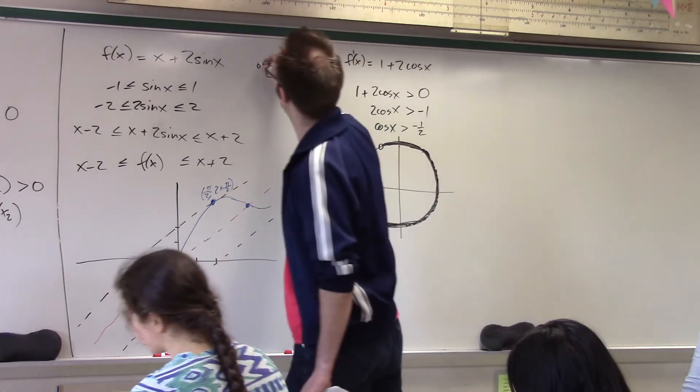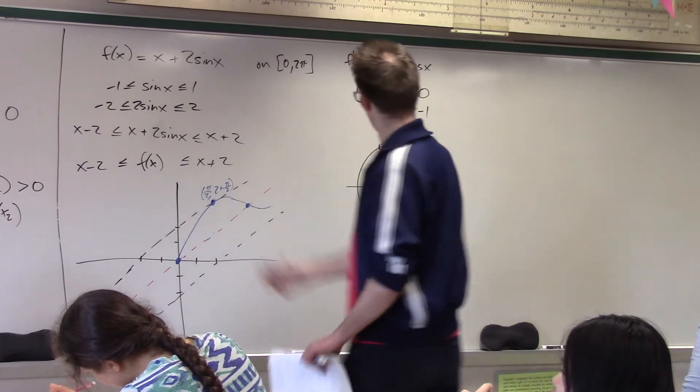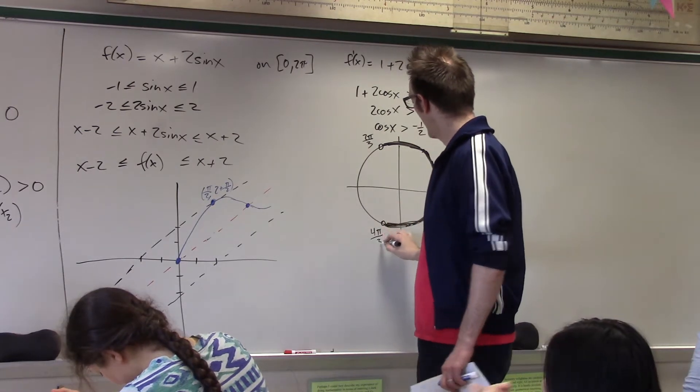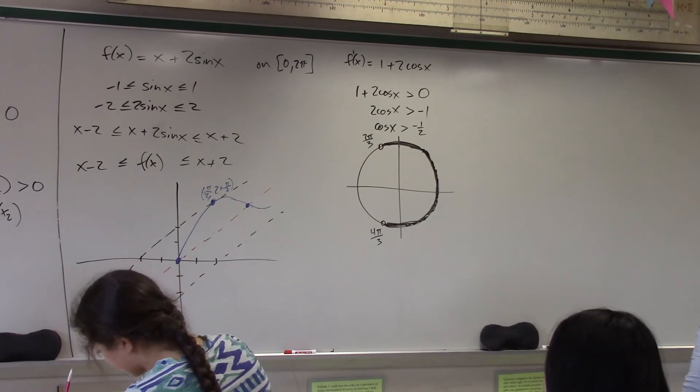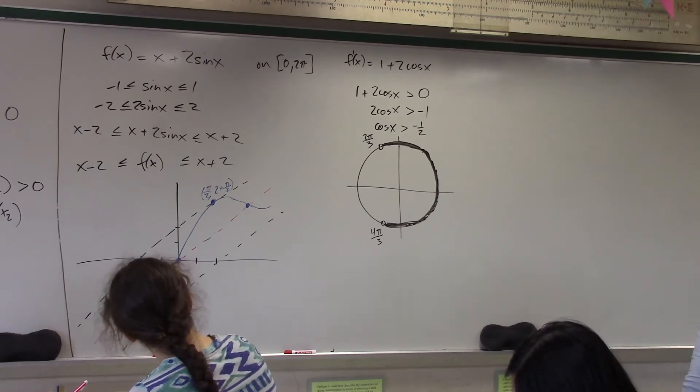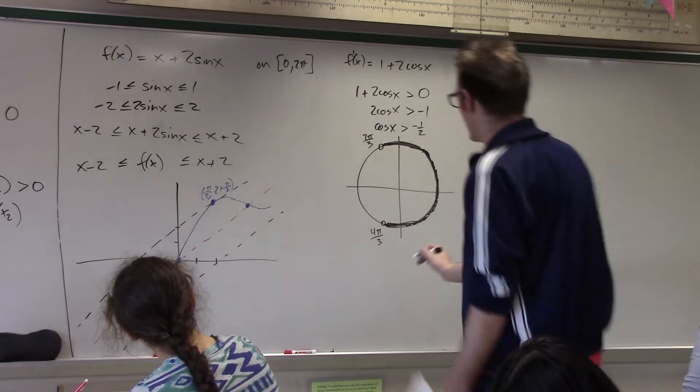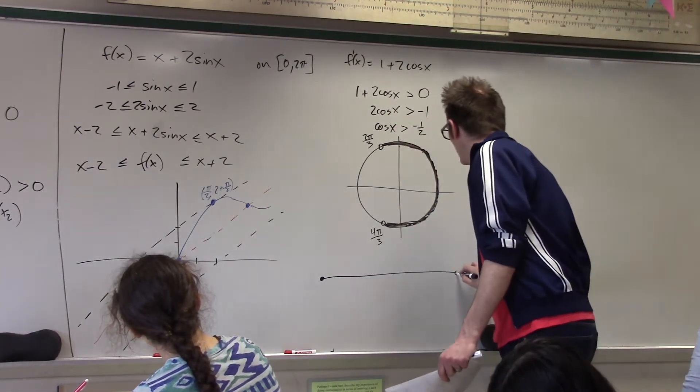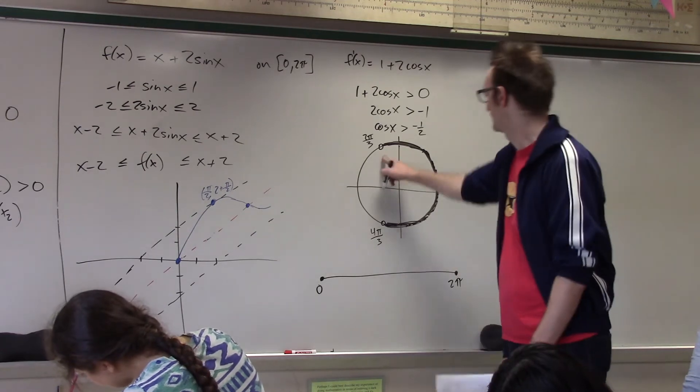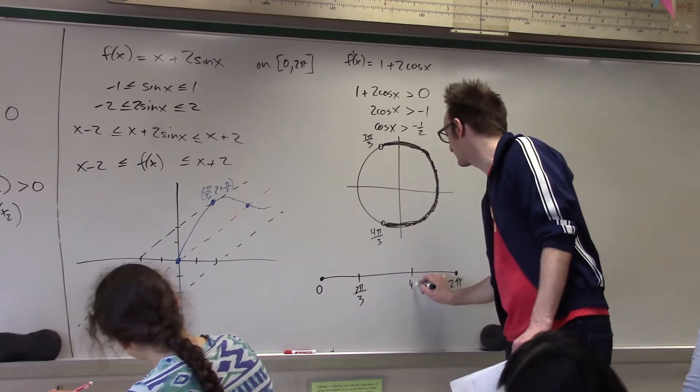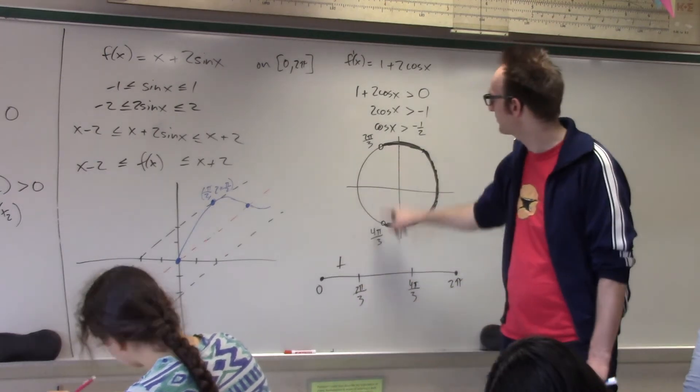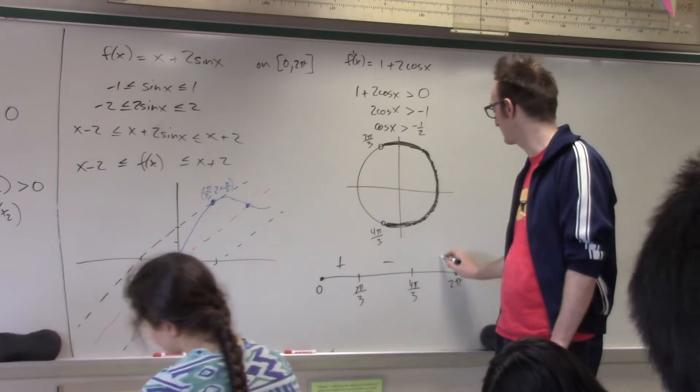So, suppose I was just looking at this function on the interval from 0 to 2 pi, because that's, like, a thing that we do. Well, then, if this is 2 pi over 3 and this is 4 pi over 3, I have now solved, with the picture as an aid, the problem of when the derivative is positive. Specifically, the derivative is positive wherever I'm shaded and, therefore, it's negative everywhere else. Cool, cool? Okay, so, let's make a sign chart from 0 to 2 pi. Where does the sign of the derivative change? 2 pi over 3 and it also changes at 4 pi over 3.